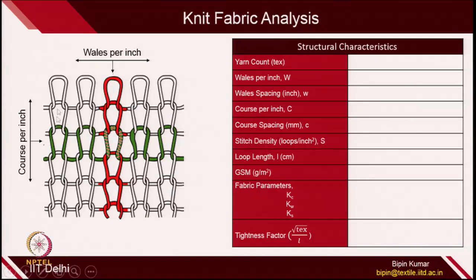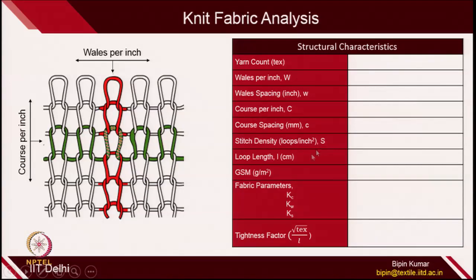Course spacing is the distance between 2 courses. Stitch density is how many loops you can count per unit area — we define this as number of loops per inch square. Loop length is the actual length of the loop being used inside the fabric. GSM is gram per meter square — it is the weight of the fabric expressed per meter square; the weight of a certain area expressed in gram per meter square.